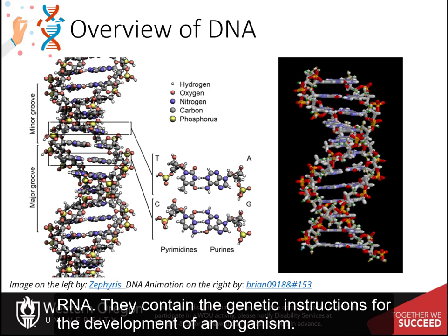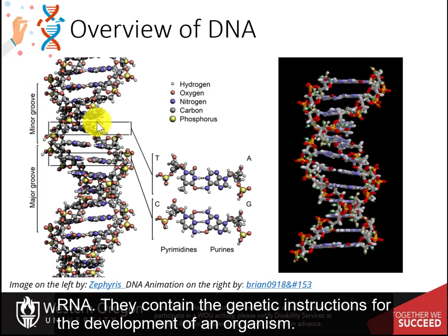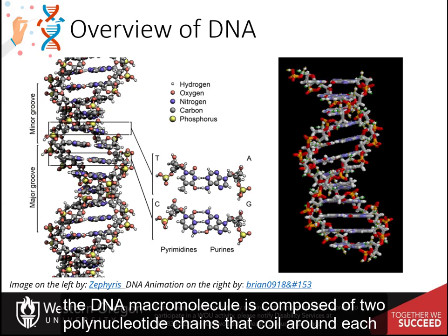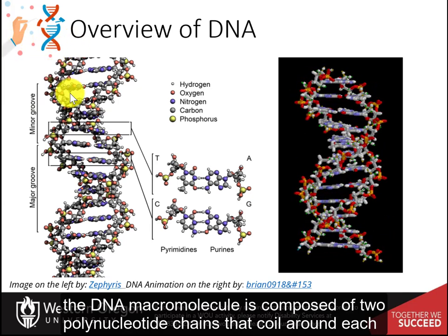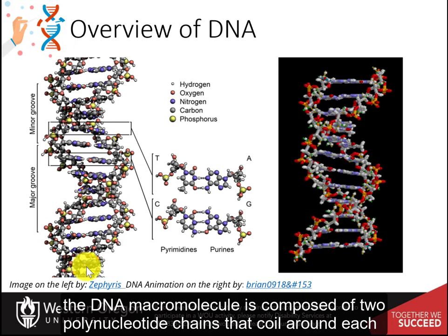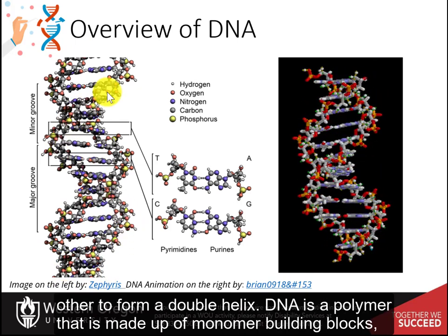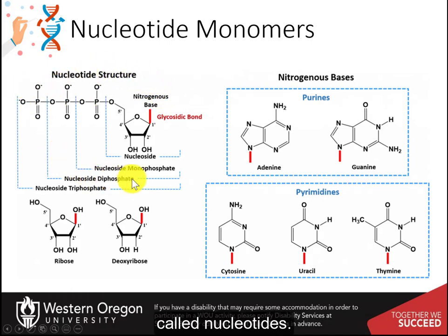DNA and RNA contain the genetic instructions for the development of an organism. The DNA macromolecule is composed of two polynucleotide chains that coil around each other to form a double helix. DNA is a polymer that is made up of monomer building blocks called nucleotides.